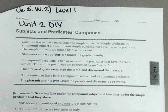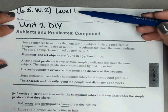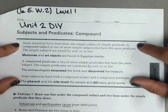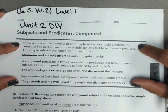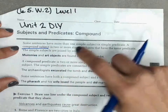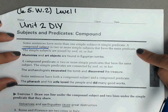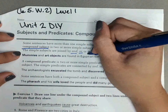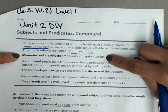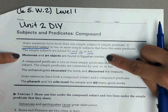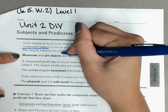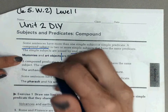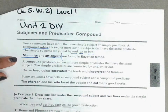On the back of your page you should see Unit 2 DIY Level 1, 6.5.W.2 — subjects and predicates compound. It says some sentences have more than one simple subject or simple predicate. A compound subject is two or more simple subjects that have the same predicate. The simple subjects are joined by 'and,' 'or,' or 'but.' For example: 'Mummies and art objects are found in Egyptian tombs.' We have two different things found in Egyptian tombs — mummies and art objects — so it's a compound subject, meaning there are two things doing one action.